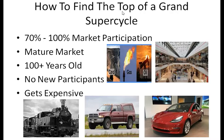How do we spot the top of a grand super cycle or just a super cycle? Both of them are long — both of them are 100 plus years old. Here are some characteristics of the top: 70 to 100% market participation, meaning a lot of people own it, it's widely available, easy to get, easy to use, and it's extremely efficient.